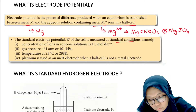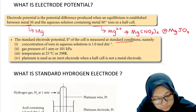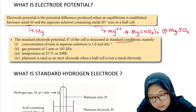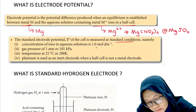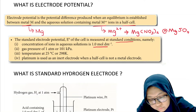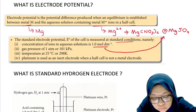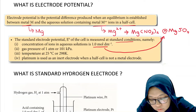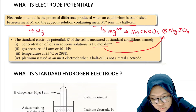The standard electrode potential E° value of the cell is measured at standard conditions. The first standard condition is that the concentration of the aqueous solution is 1 mol dm⁻³. This means the aqueous solution of metal M must have a concentration of 1 mol dm⁻³. The second condition is a gas pressure of 180 mmHg or 101 kPa.